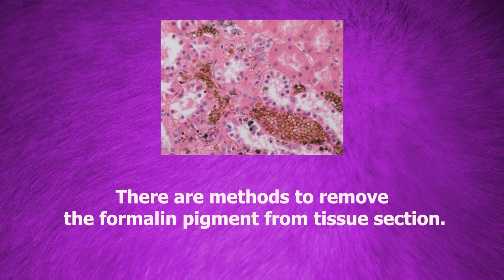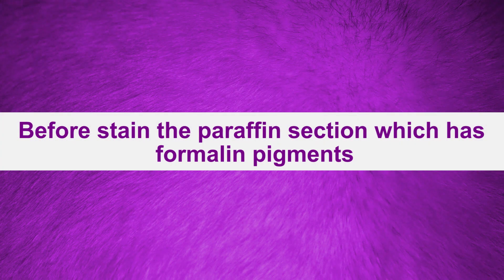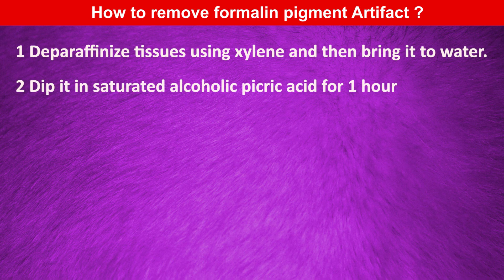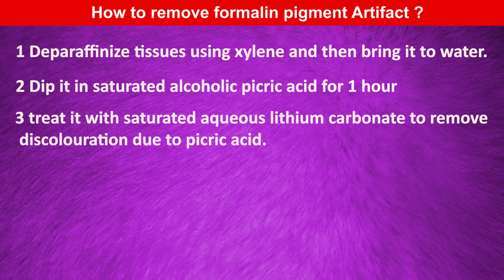But if it occurs mistakenly, how do we remove it? There are methods to remove the formalin pigment from tissue sections. Before staining the paraffin section which has formalin pigments, you should deparaffinize it using xylene and then bring it to water. Then dip it in saturated alcoholic picric acid for 1 hour. You can treat it with saturated aqueous lithium carbonate to remove discoloration due to picric acid.